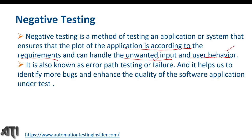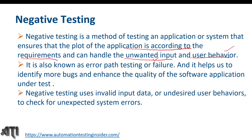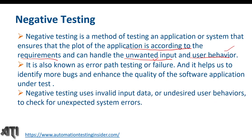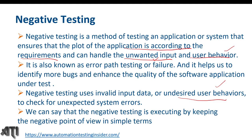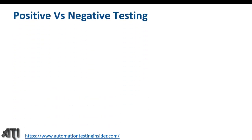As a tester, our intention should be to break the system — we should think about all permutations and combinations when testing any application. Negative testing uses invalid input data or undesired user behaviors to check for unexpected system errors. We should also consider undesired user behavior and negative scenarios — how the system behaves when we provide invalid data or perform invalid operations.